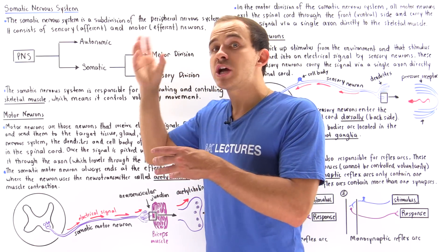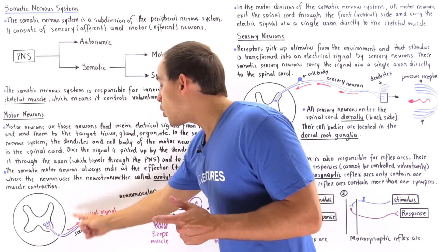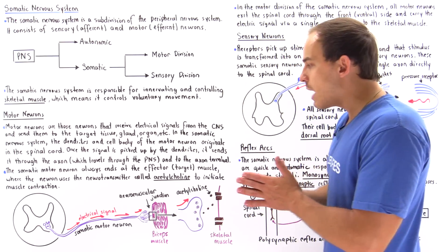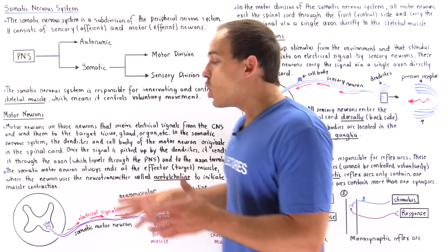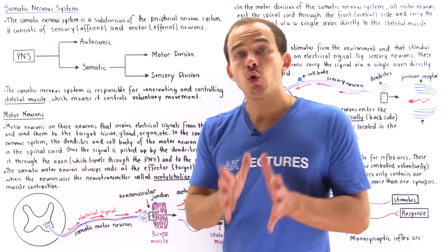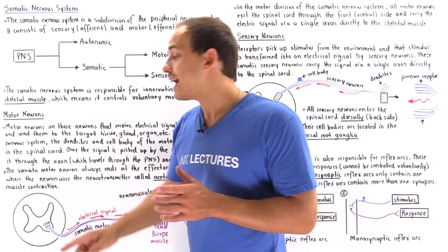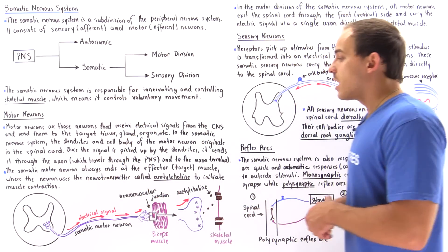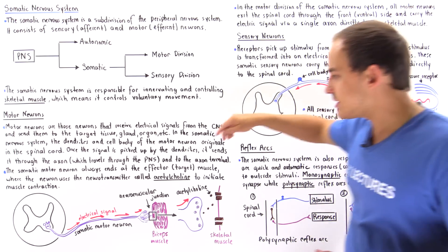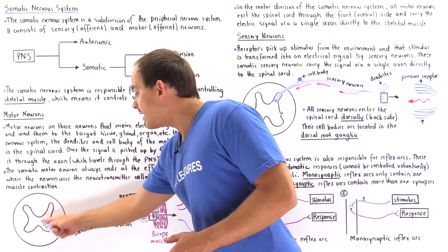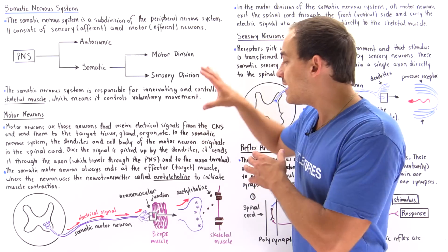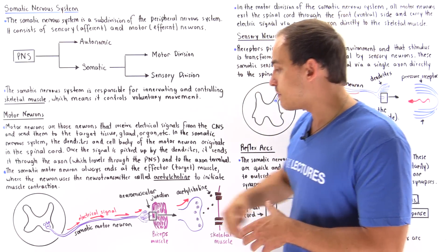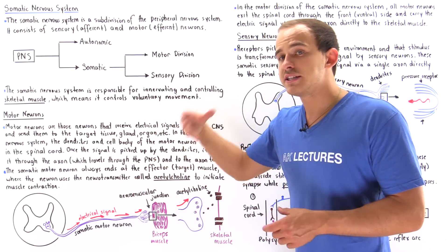In this way, the brain generates the electrical signal, but it is the motor neuron of the somatic nervous system that actually causes that voluntary movement. One important point about motor neurons is that when they exit the spinal cord, they always exit from the front side — the ventral side. Additionally, there is a single axon leaving the spinal cord, and that axon travels all the way to the effector target — in this case, the biceps muscle.